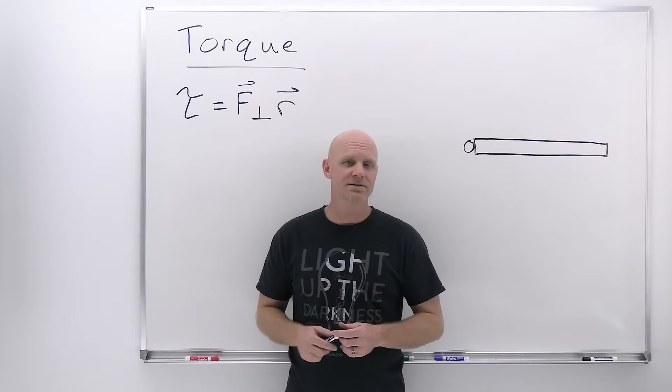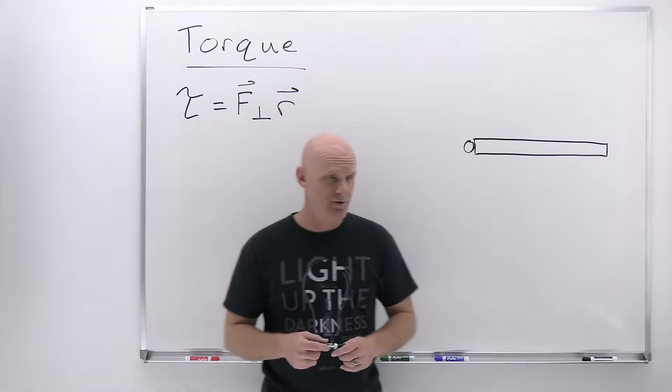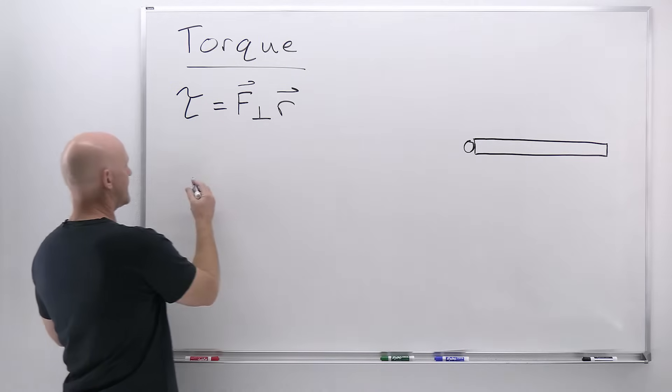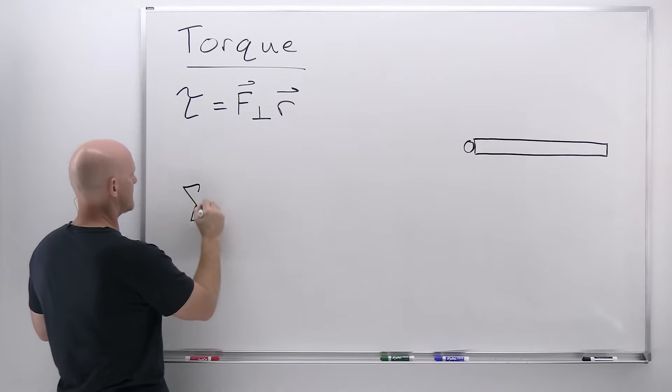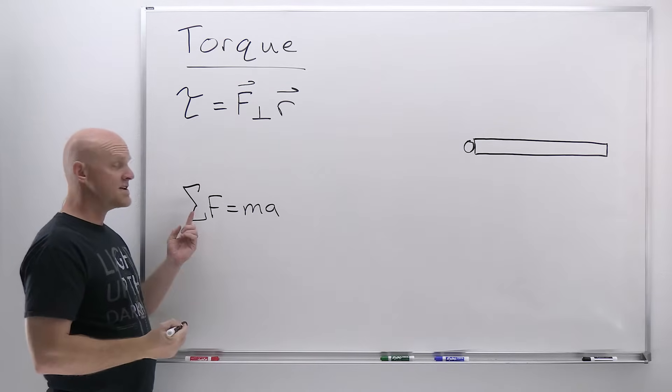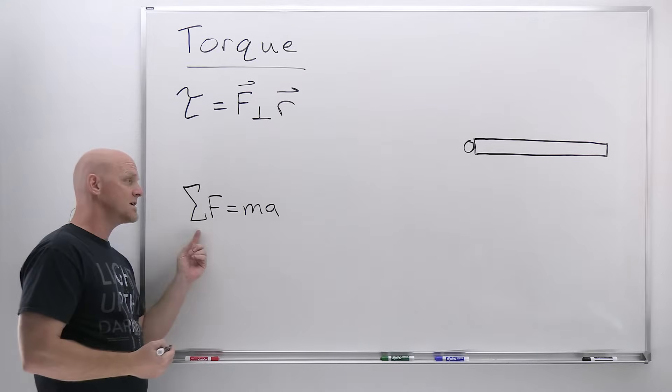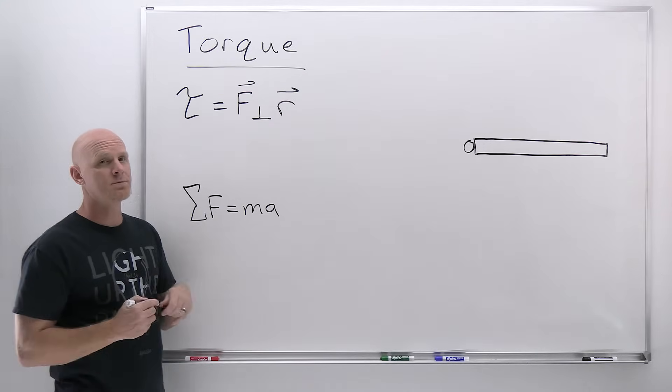Let's dig in and talk about what it means for a torque to alter an object's rotational motion. If we take a quick look back at Newton's second law, the sum of the forces equals mass times acceleration. Ultimately, if there's a net force acting on an object, it will cause an acceleration. This net force and acceleration are directly proportional.